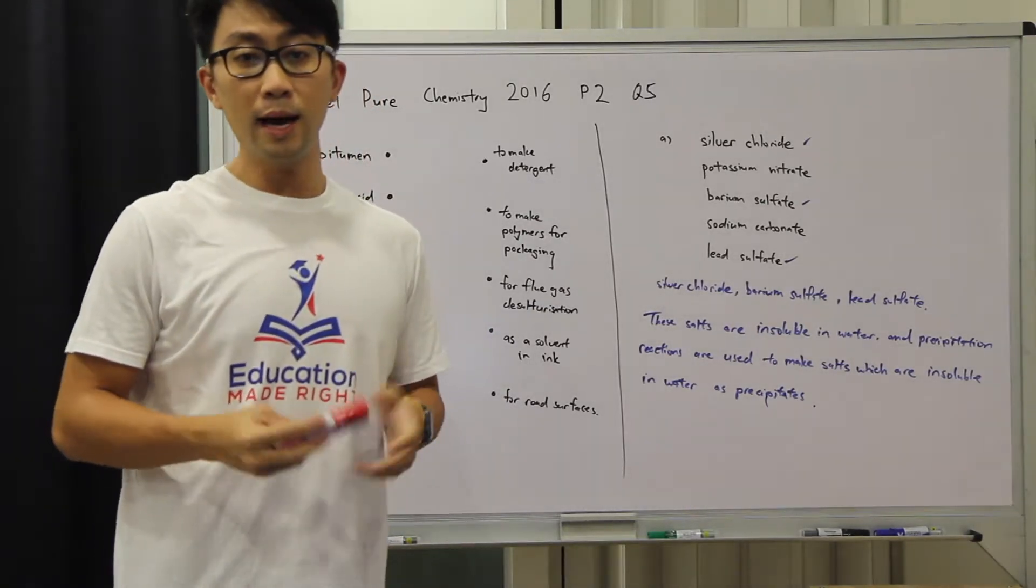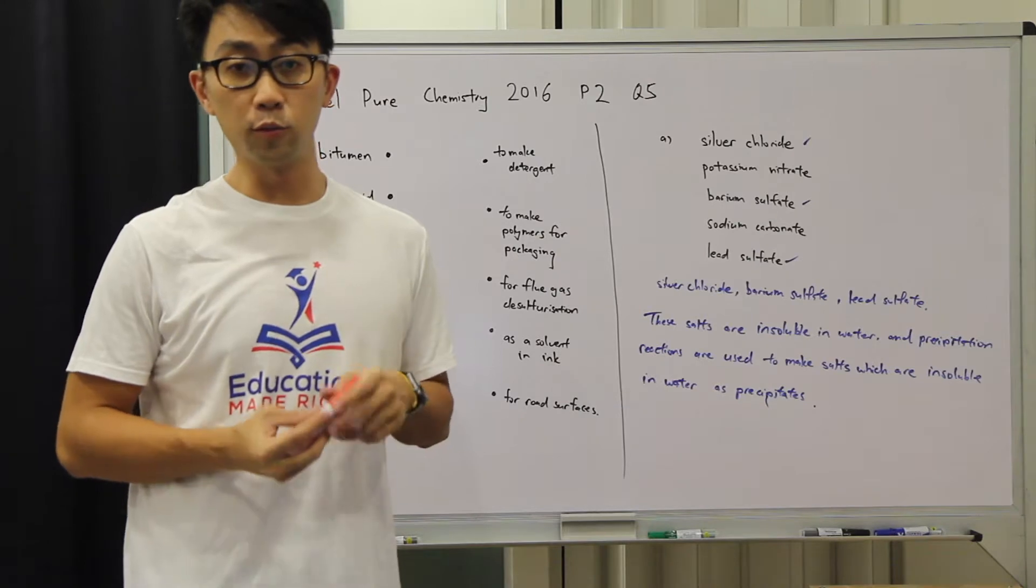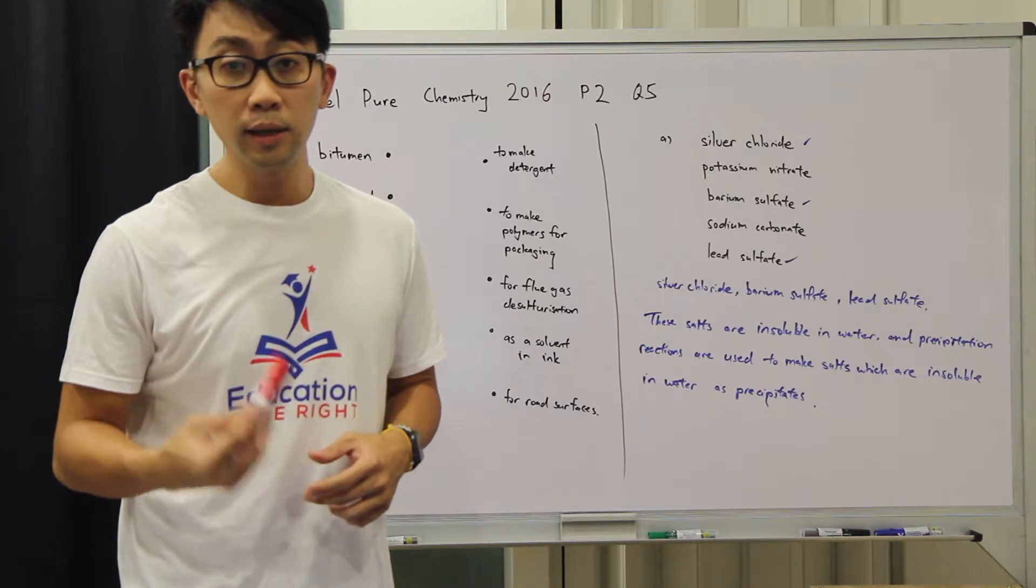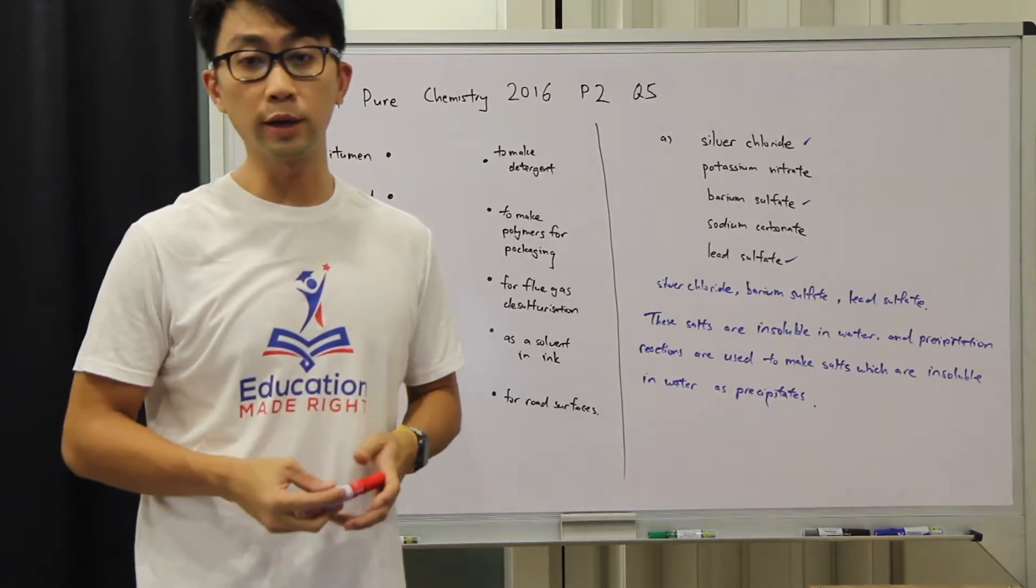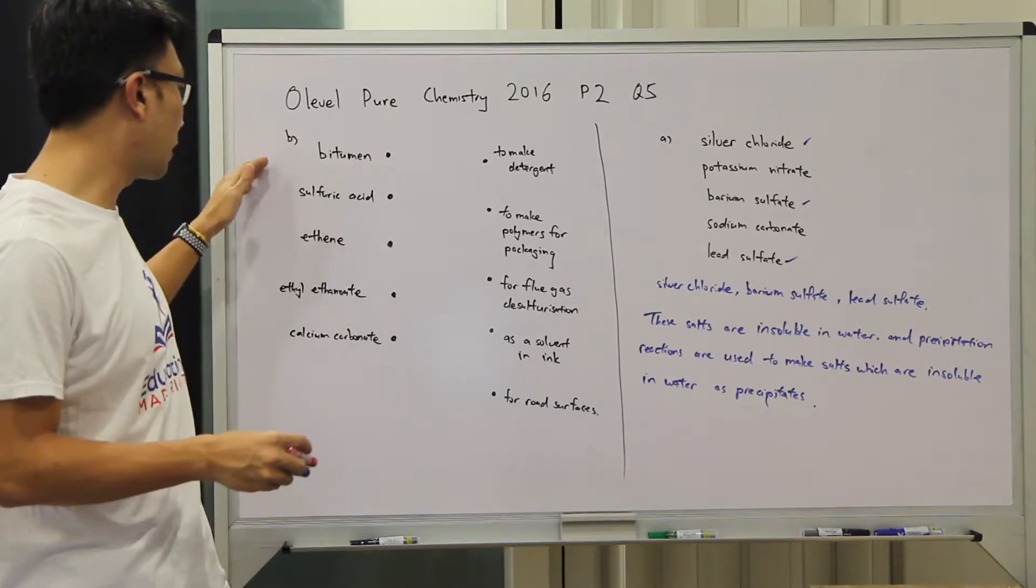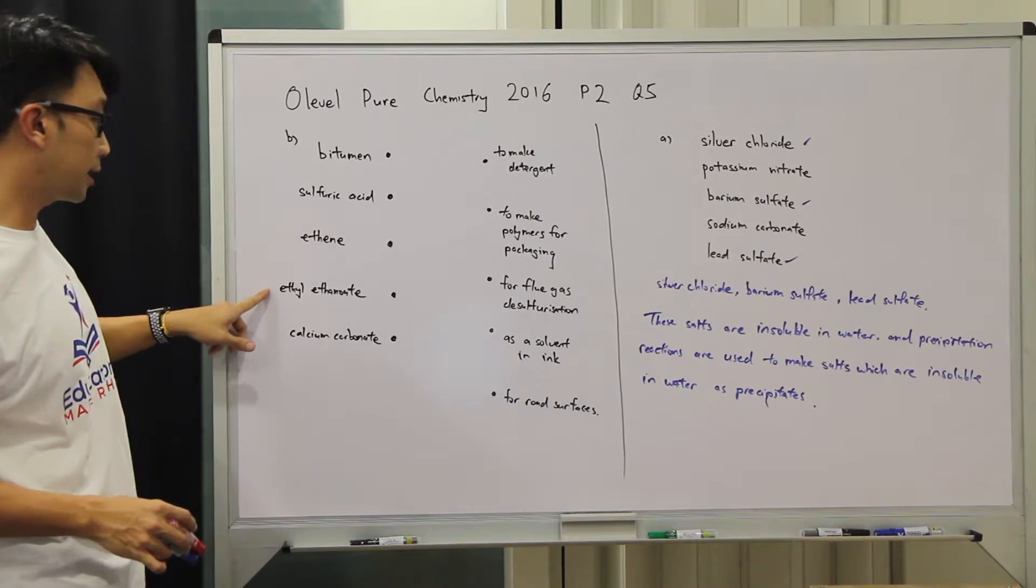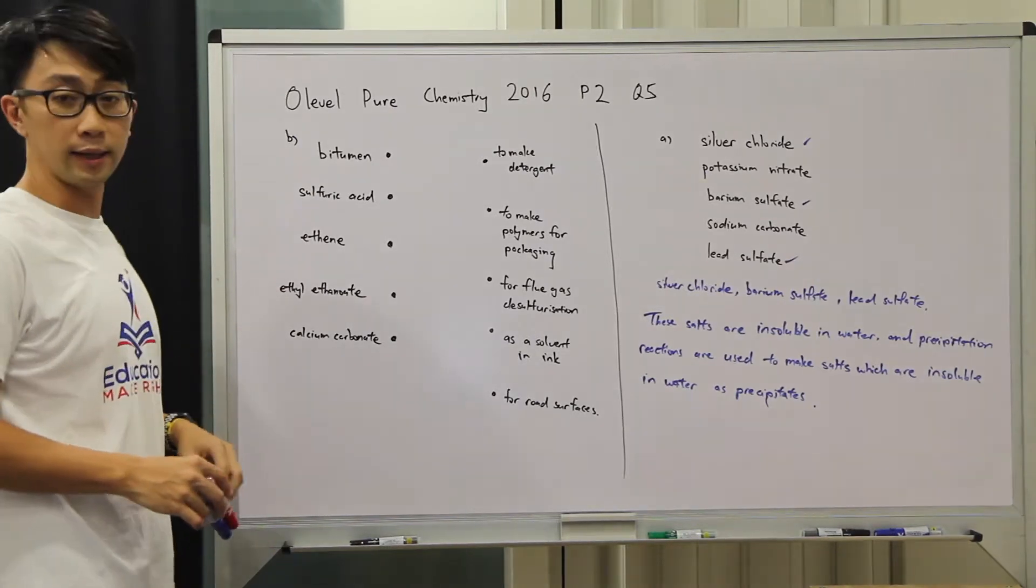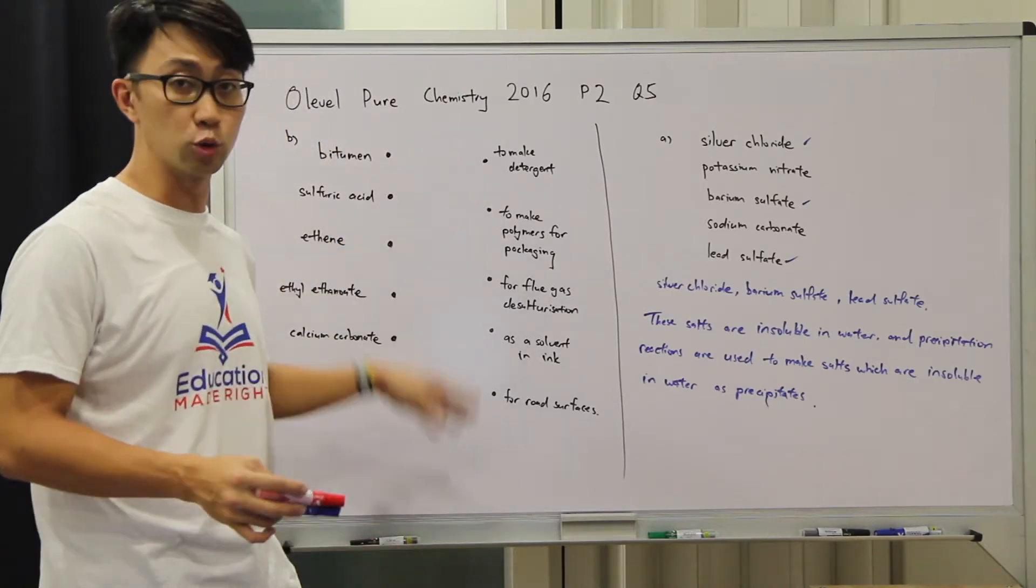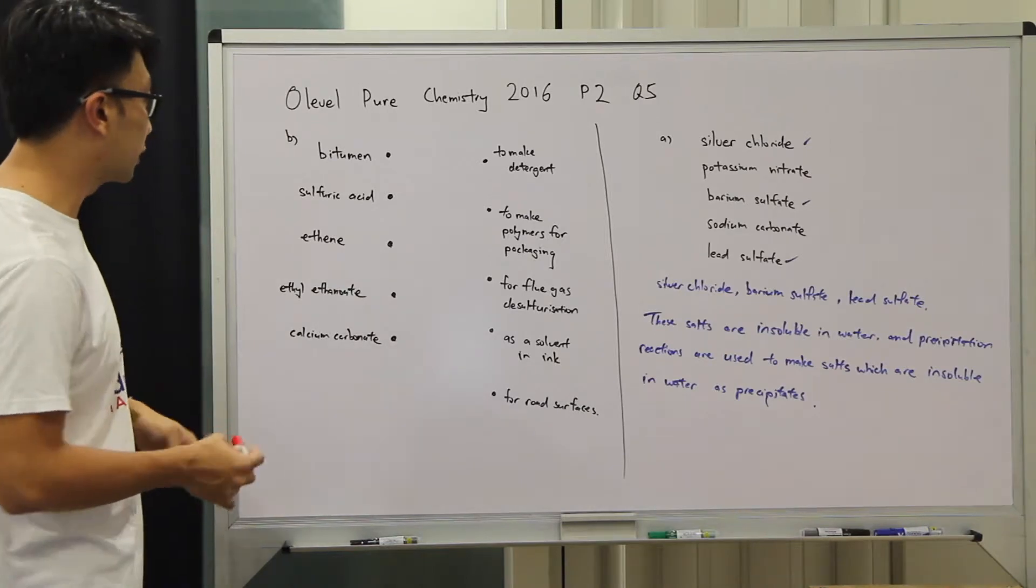Let's look at part B. Other compounds are used to make a range of useful products. Put a tick in one box in each row to show a correct use of each compound. We have got bitumen, sulphuric acid, ethene, ethyl ethanoate and calcium carbonate. We have got several uses that we are supposed to link the compound to, each for one of them.